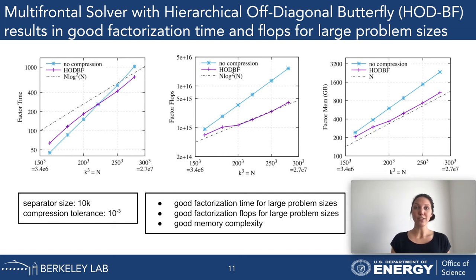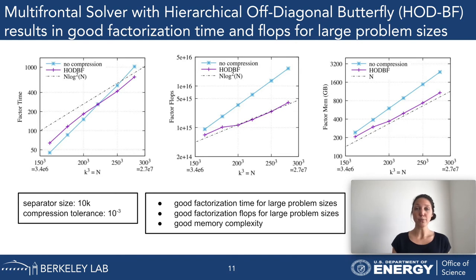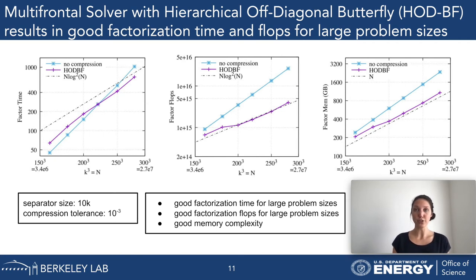Another parameter used here is the so-called compression tolerance, which is used inside the compression method to decide how accurately we compress. That is set to 10⁻³. This is a parameter we can adjust, but we stick to 10⁻³ for this talk.